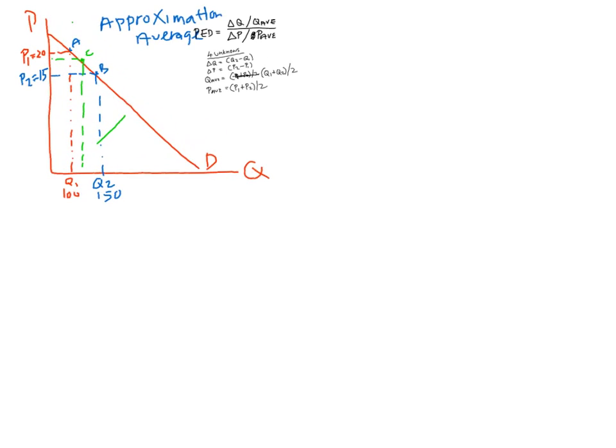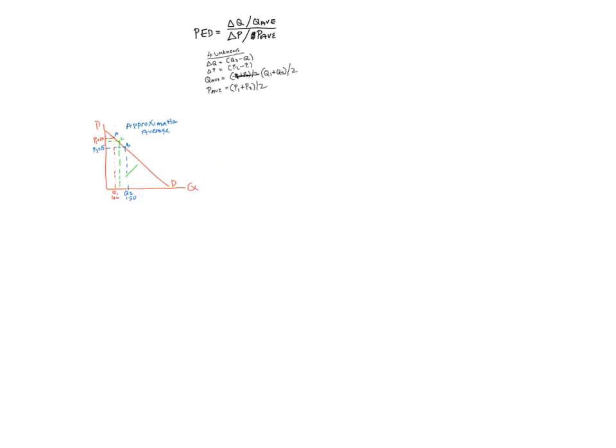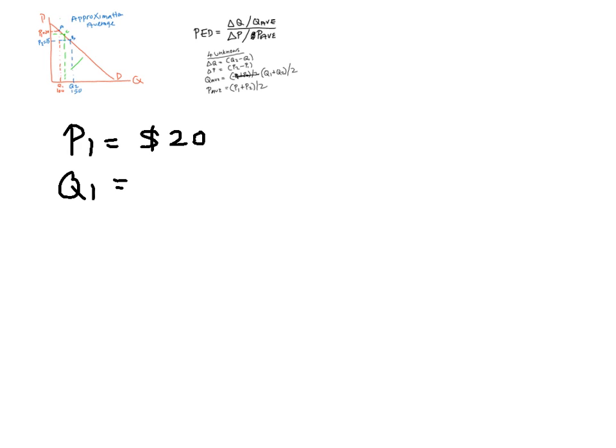Let's look at the information that we have and we can write it up. So what do we know? We know that P1 is $20 and Q1 is 100 units. We know that P2 is $15 and Q2 is 150 units. This makes sense. As price comes down, quantity demanded goes up.